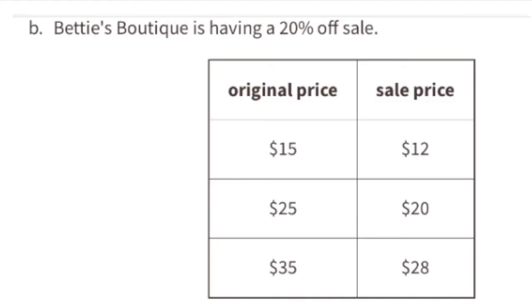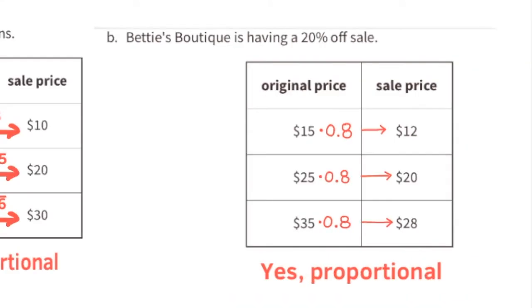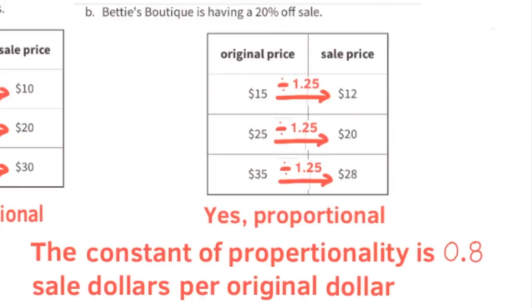Table B: Betty's Boutique is having a 20% off sale. The original price $15 is 0.8 times larger than the sale price $12. The original price $25 is 0.8 times larger than the sale price $20. The original price $35 is 0.8 times larger than the sale price $28. Table B is proportional because the original price is constantly the same times larger than the sale price. The constant of proportionality is 0.8 sale dollars per original dollar.